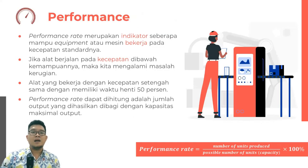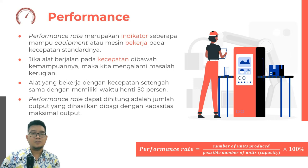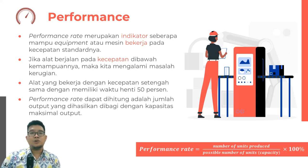Performance rate merupakan suatu indikator seberapa mampu equipment ataupun mesin itu bekerja pada kecepatan standarnya. Jika peralatan kita berjalan pada kecepatan di bawah kemampuannya, maka sebenarnya kita telah mengalami kerugian. Alat yang bekerja dengan kecepatan setengah dari kemampuan utamanya, maka sama saja kita memiliki waktu yang terhenti selama 50%. Performance rate dapat dihitung dengan membagi jumlah output yang dihasilkan dibagi dengan kapasitas output yang dihasilkan, dikali dengan 100%.